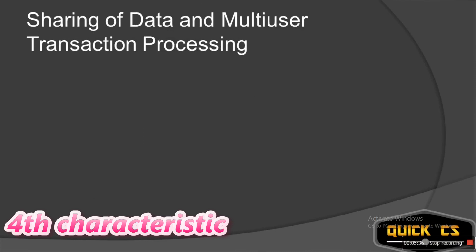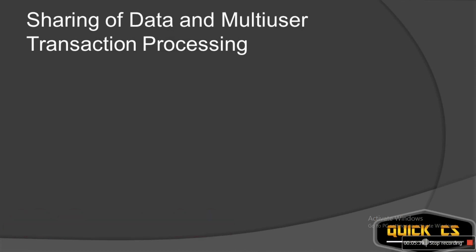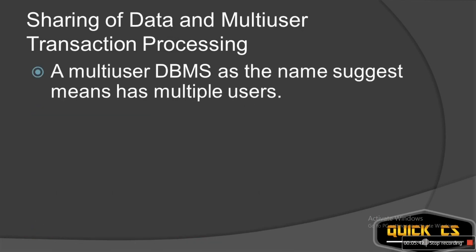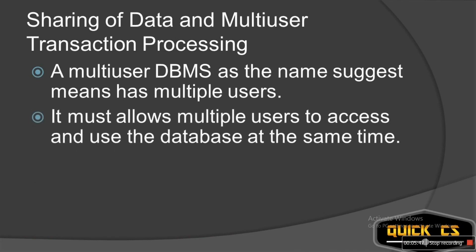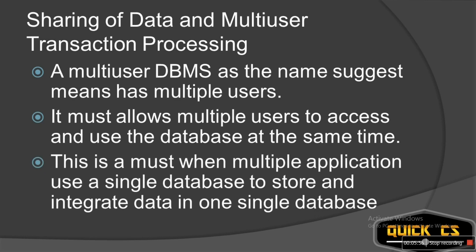Now let's look at the fourth characteristic: sharing of data and multi-user transaction processing. A multi-user DBMS must allow multiple users to access and use the database at the same time. This is a must when multiple applications use a single database to store and integrate data. Sharing of data and multi-user transaction processing is a characteristic that a DBMS must have so that it becomes useful for multiple users.